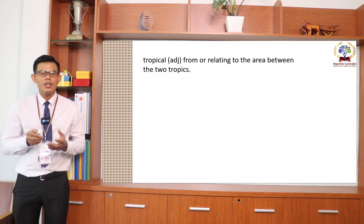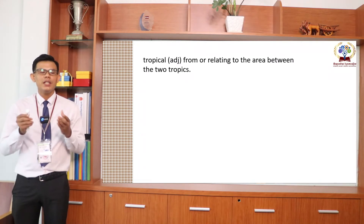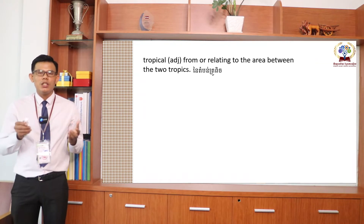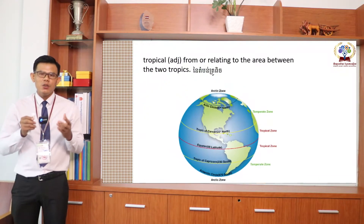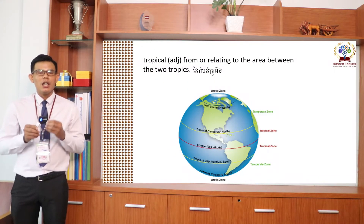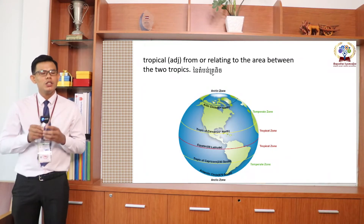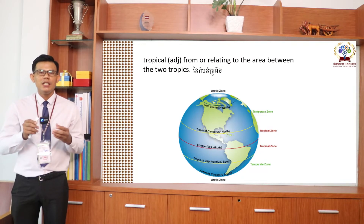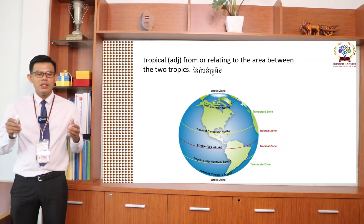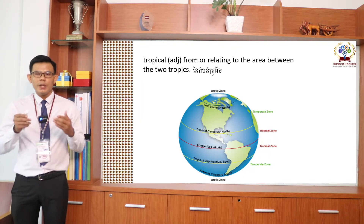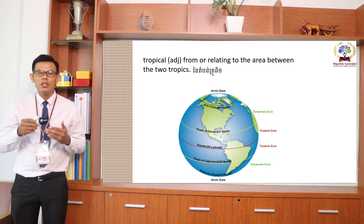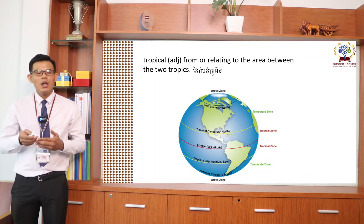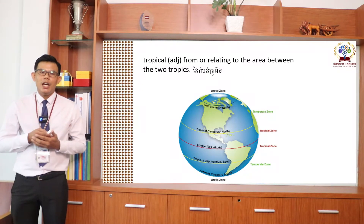Tropical means from or related to the area between the two tropics. Look at the globe — when you see the red line in the middle, it is the equator line, which divides the two different tropics. We have the northern tropics, also called the northern hemisphere, and the southern tropics, also called the southern hemisphere.